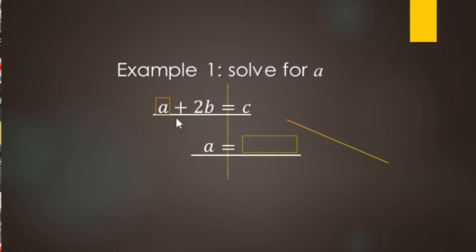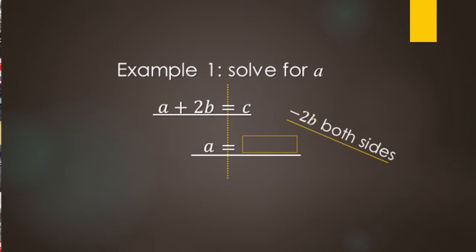First up, what is being done to A? Well, it's being added by 2B. So we want to undo A plus 2B — because we want to go from A plus 2B to just A — by subtracting 2B from both sides. So the new right-hand side is going to be C minus 2B, and that's it.